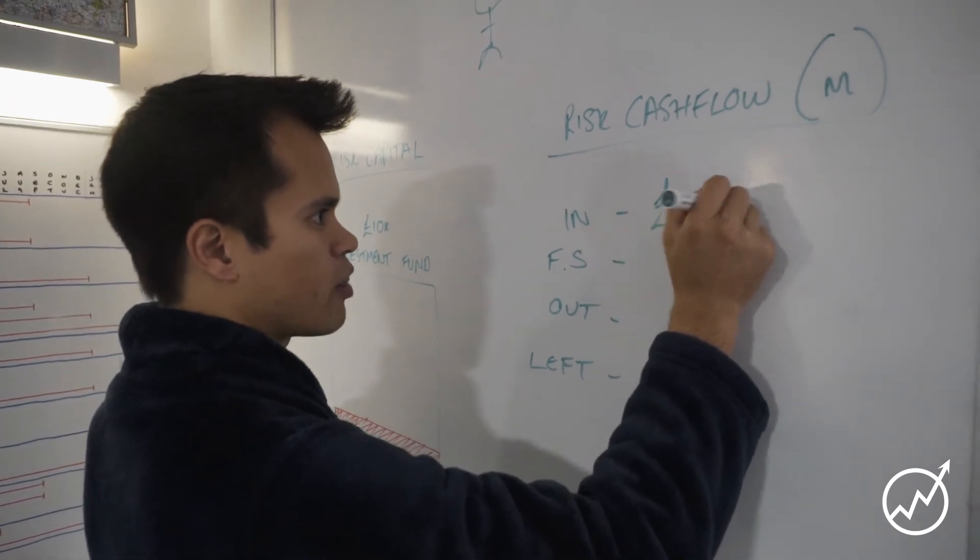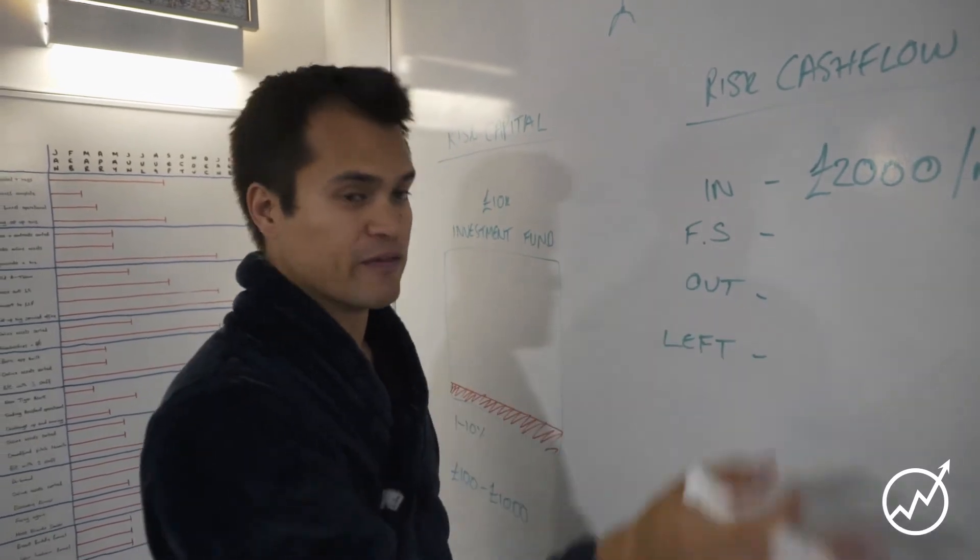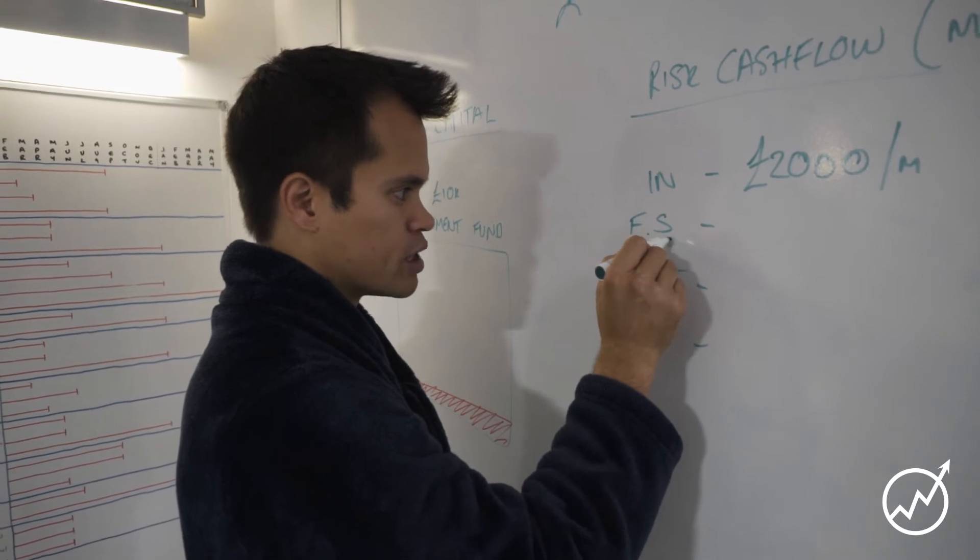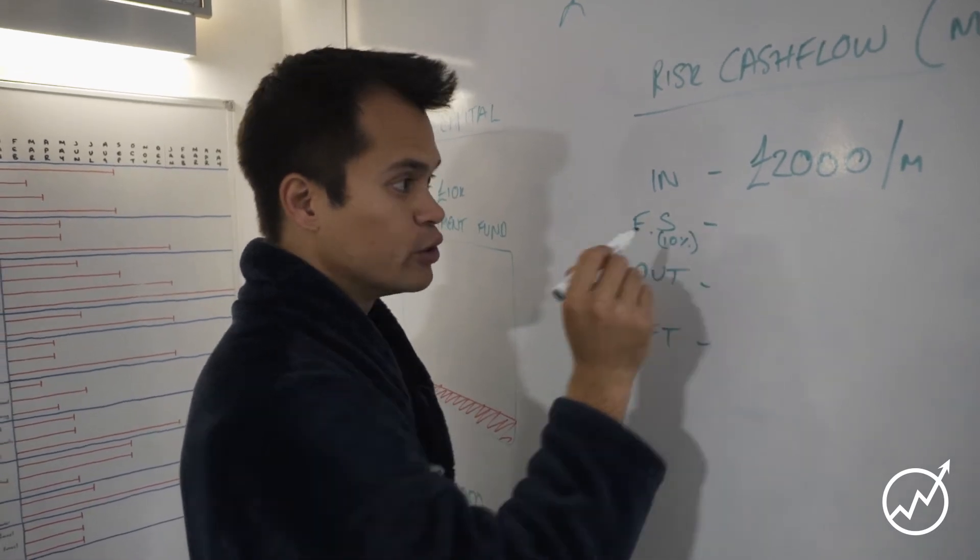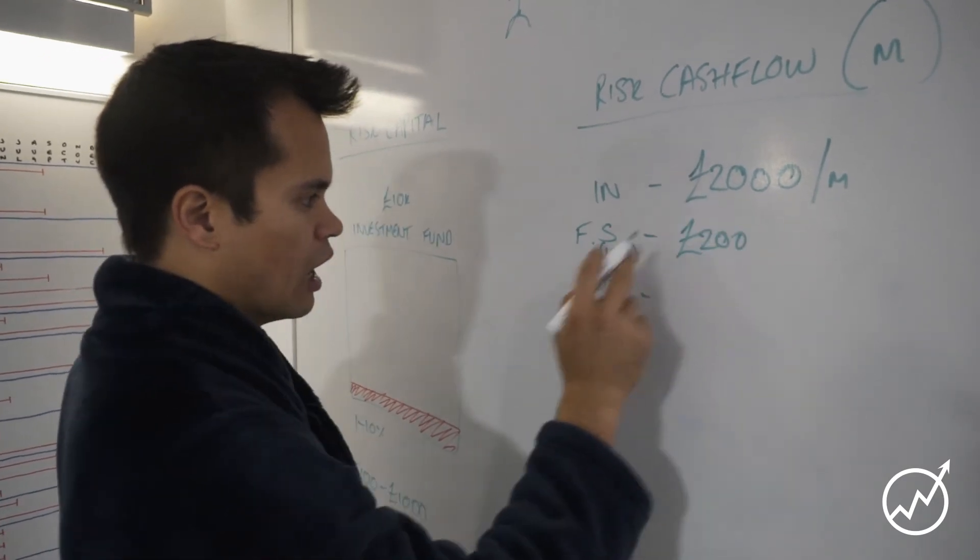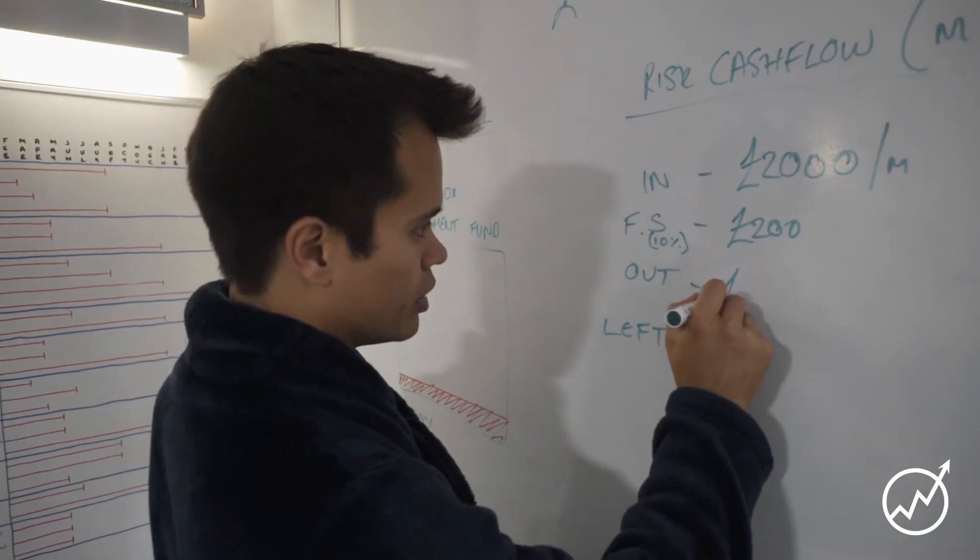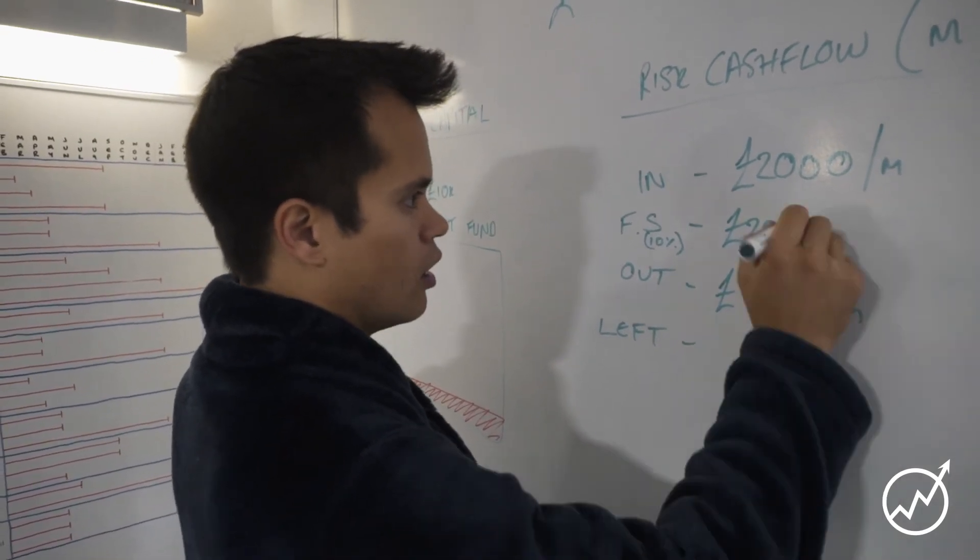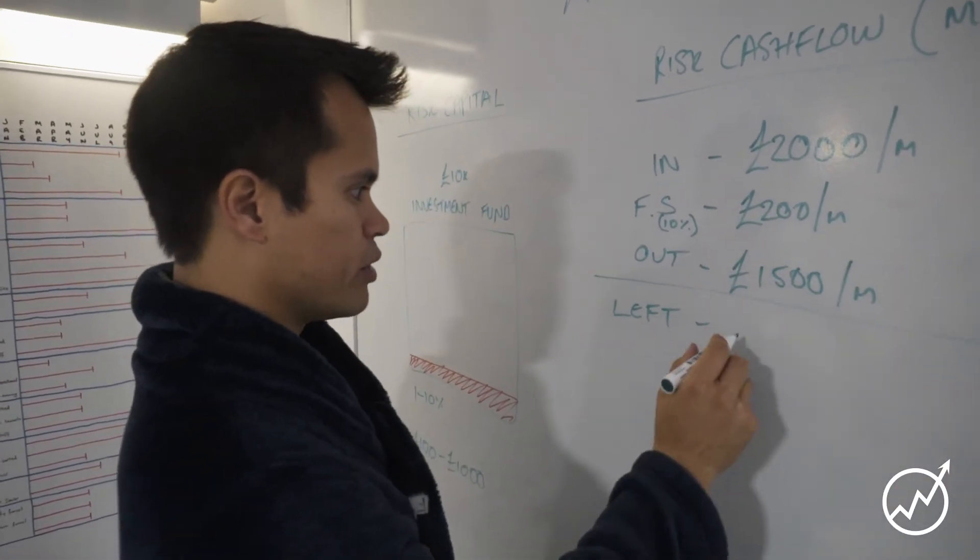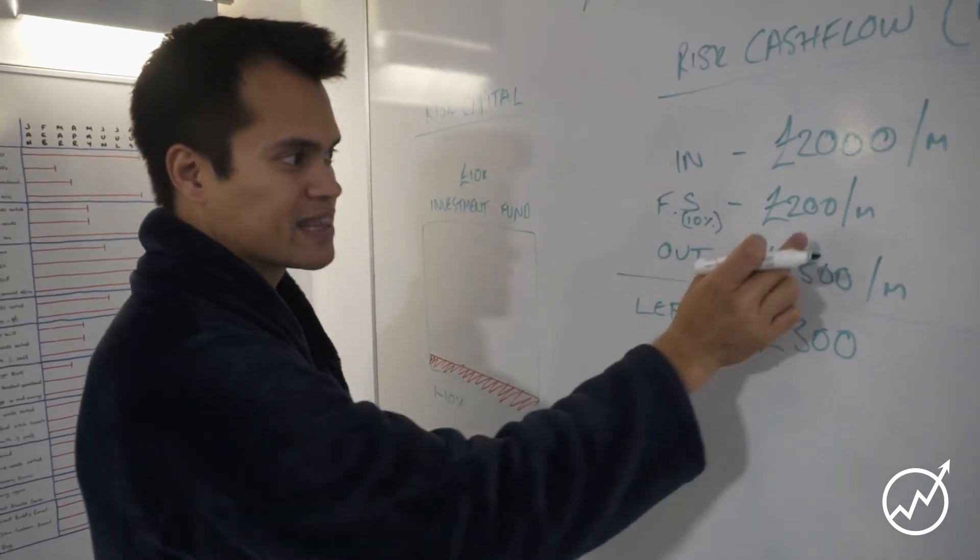So let's say you're bringing in two grand a month. Now forced savings is something which everyone should do and no lower than 10%. So basically 10% of your income you need to save. In this case that's 200 pounds. Outgoings, I don't know, let's just say your outgoings are 1500 quid a month.